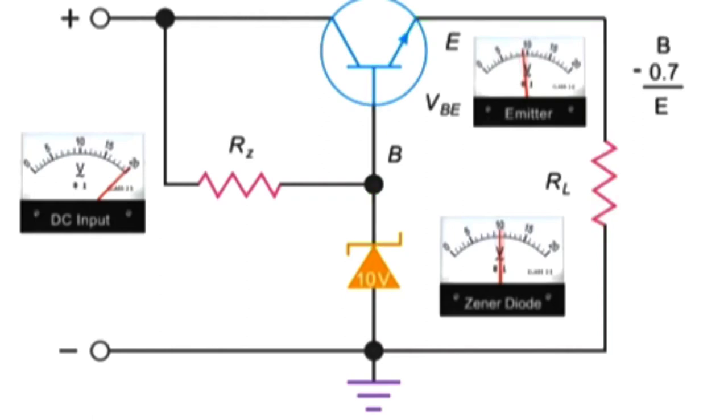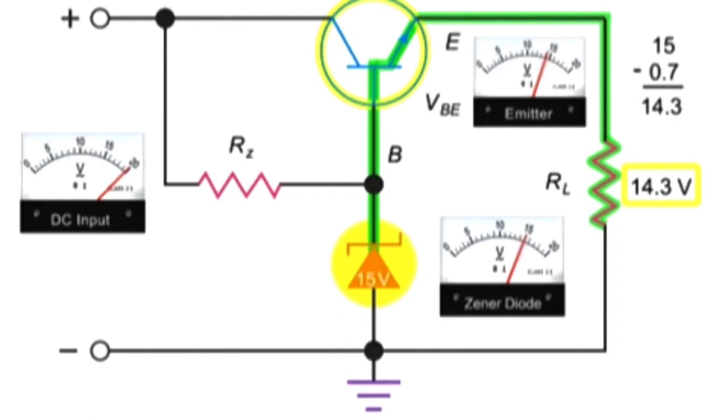With a Zener diode value of 15 volts, you'll have a 14.3 volt voltage at the emitter and the RL resistor.